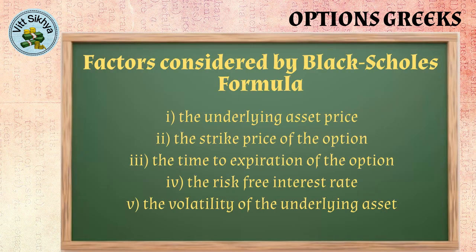Greeks are calculated using the Black-Scholes formula, a mathematical model used to calculate the theoretical price of an option contract. It takes into account the underlying asset price, the strike price, the time to expiration, the risk-free interest rate, and the volatility of the underlying asset. The actual calculation requires a lot of statistical expertise, so we will not get into the details, but we will now see how the Greeks affect the entire options trade.